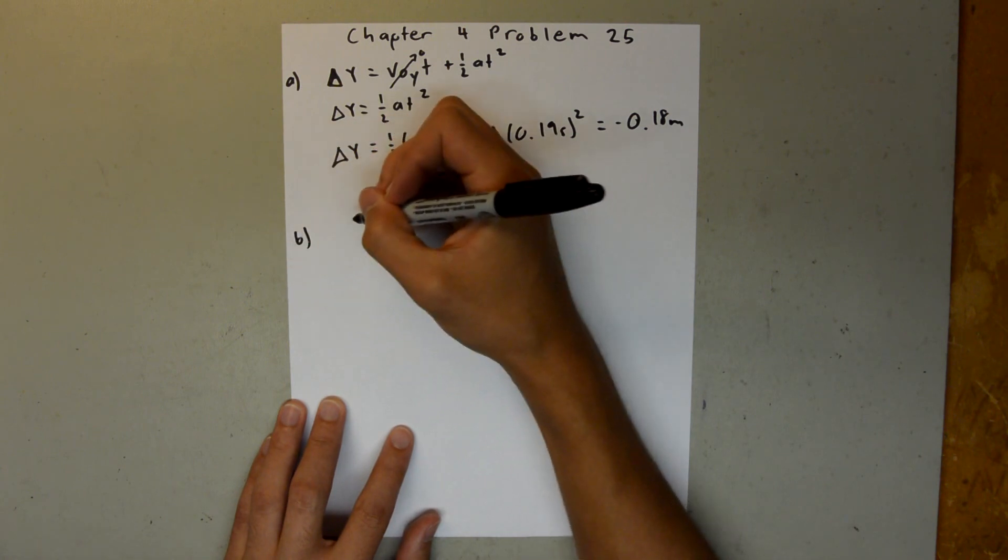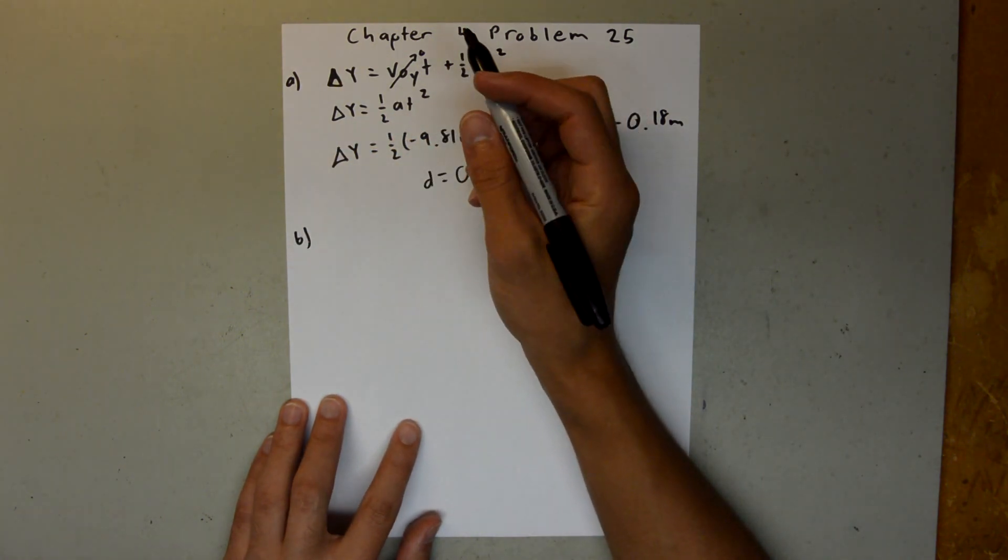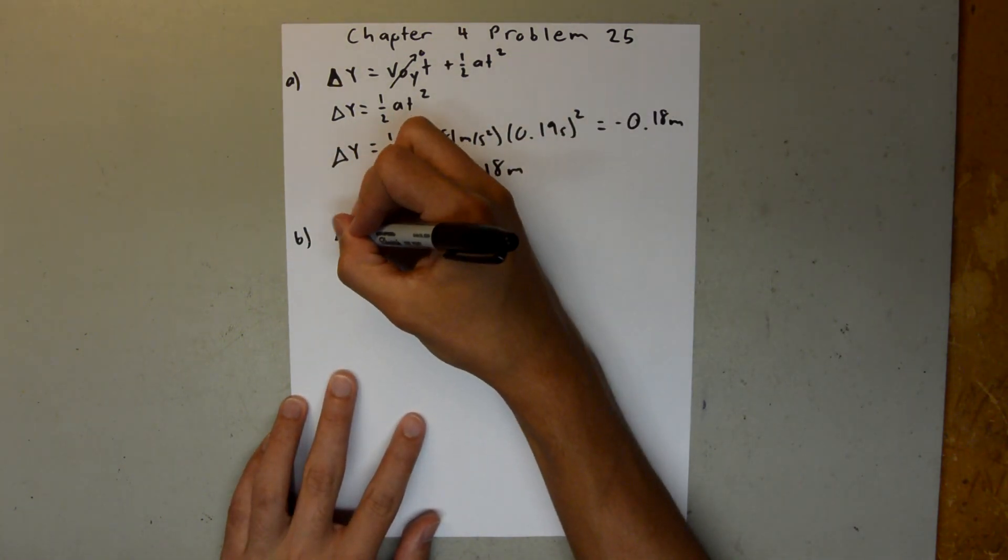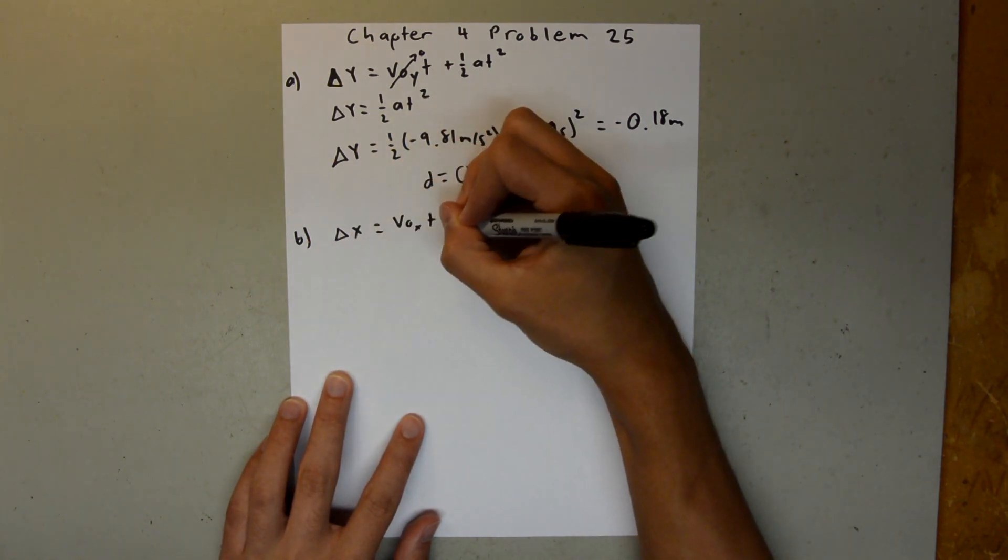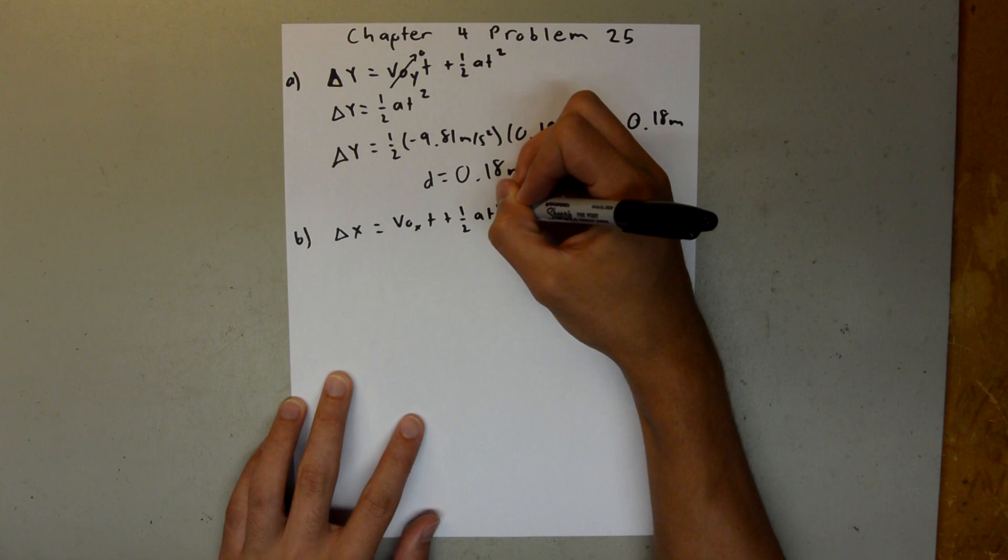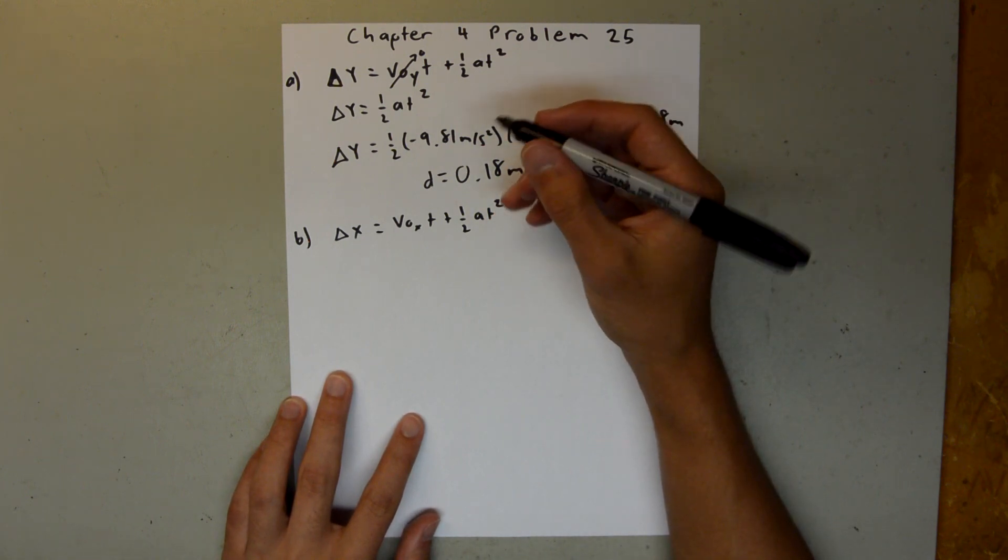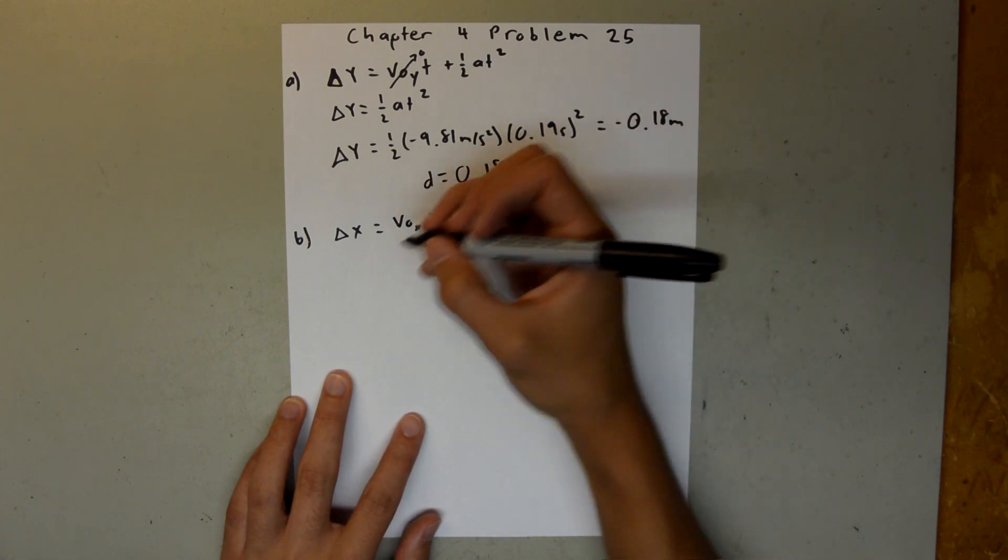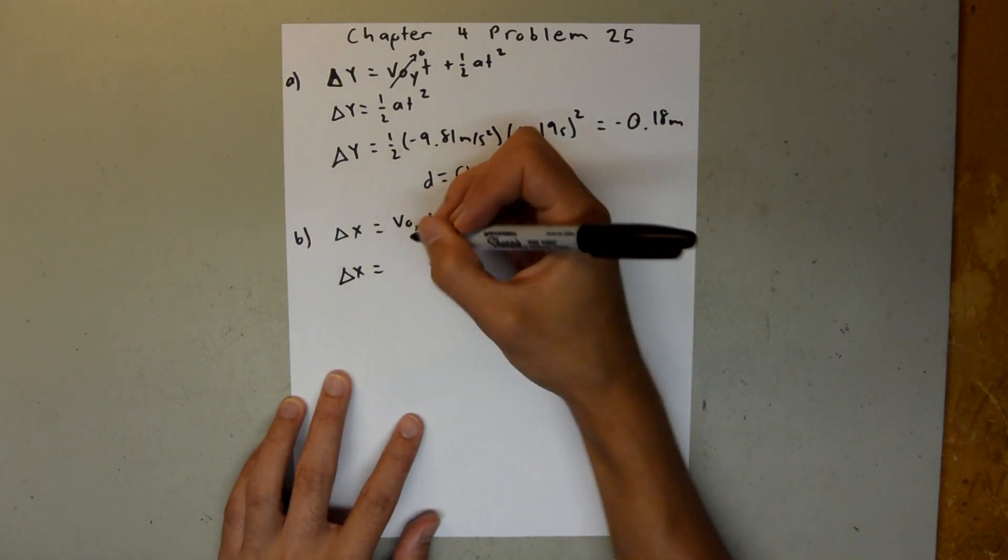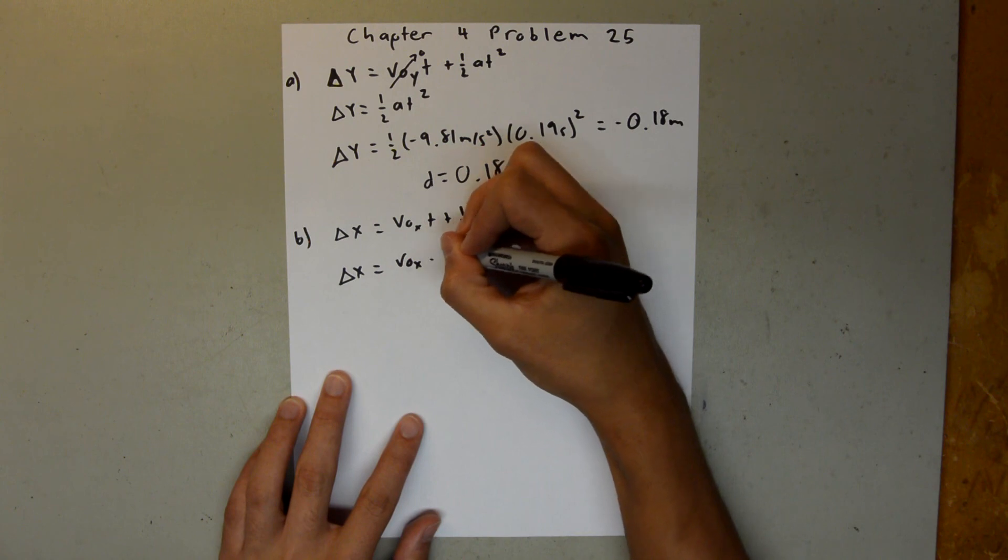And for part b, we need to find the distance that the dart thrower is from the board, and we can use the same equation and say delta x is equal to v0 x t plus one-half at squared. And in this case, the dart is not accelerating in the x direction, so we can cancel out this term.